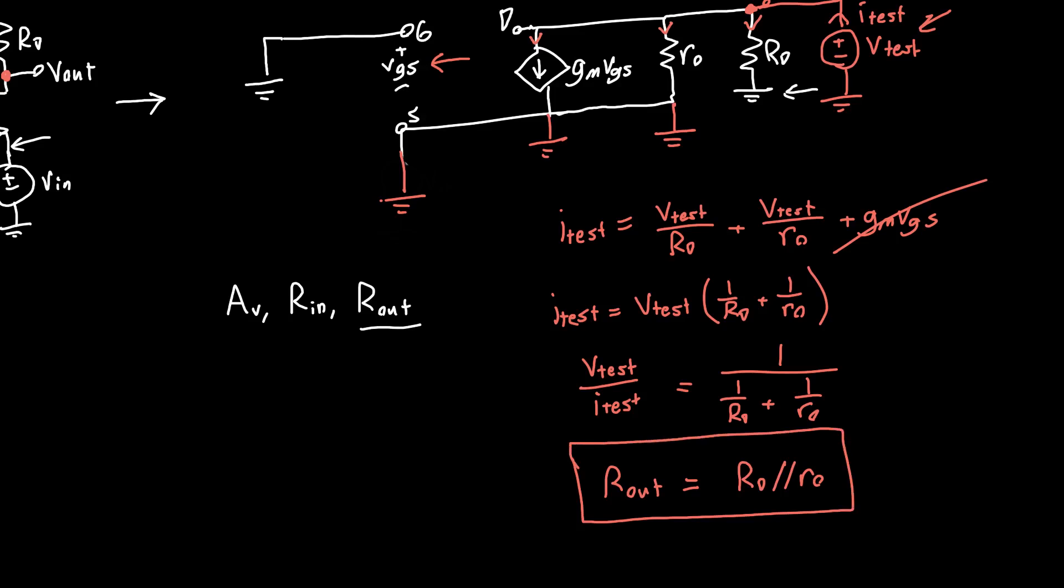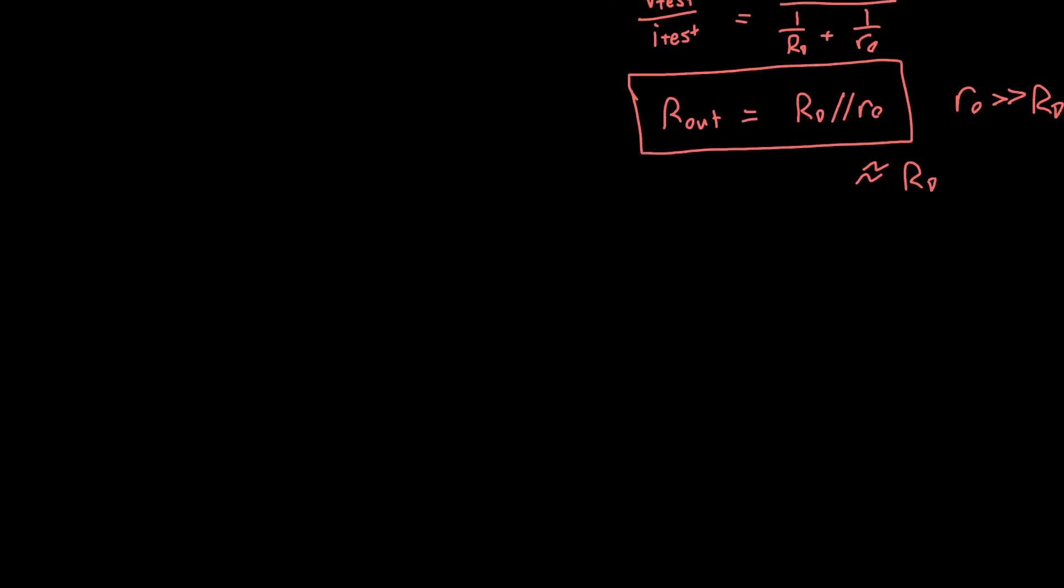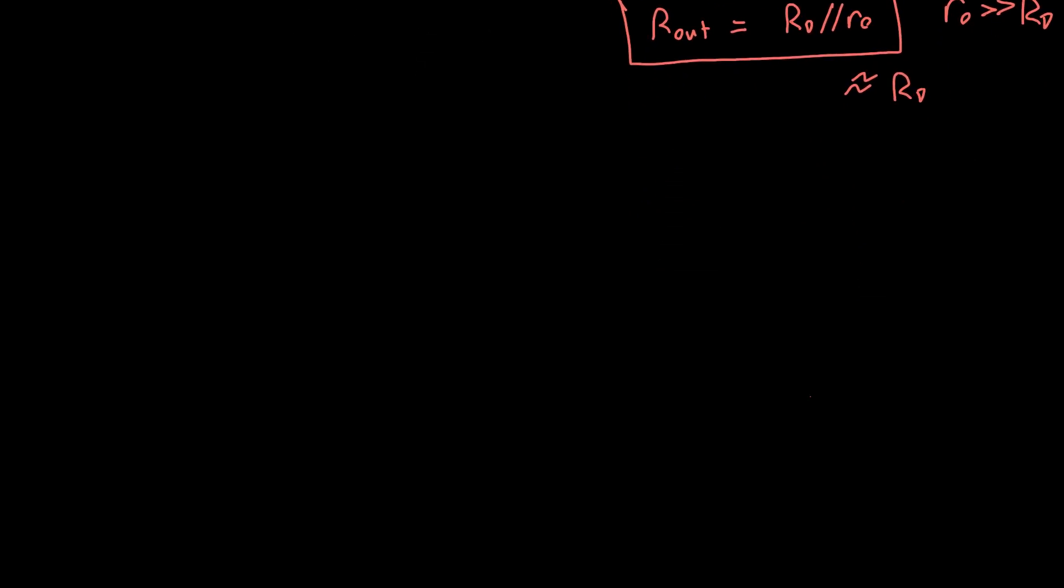But this is just the parallel combination of RD and RO. The output resistance is this simple equation, it's just RD in parallel with RO. This is relatively unchanged, especially when RO is much greater than RD. This expression is still approximately just RD. Now what about the input resistance?